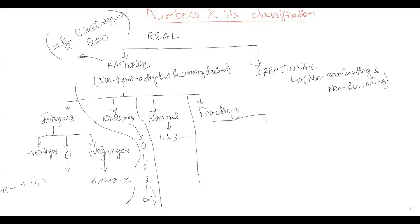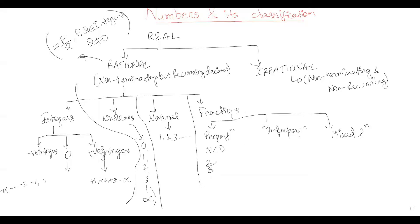Fractions are numbers that are not natural numbers or integers. Fractions are classified into proper fractions, improper fractions, and mixed fractions. Proper fractions are those where the numerator is less than the denominator — for example, two by three or four by seven. Improper fractions are those where the numerator is greater than the denominator — for example, 12 by 5, 17 by 4, or 23 by 19.